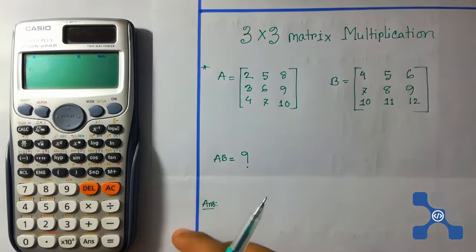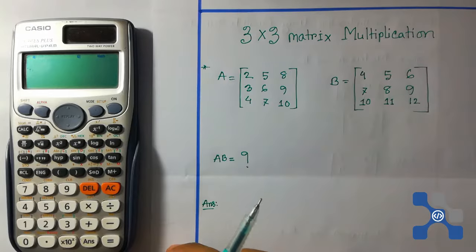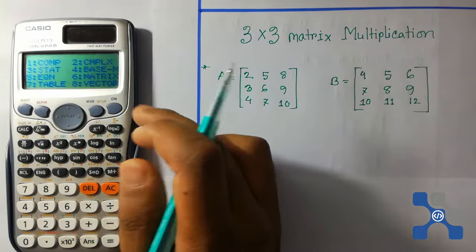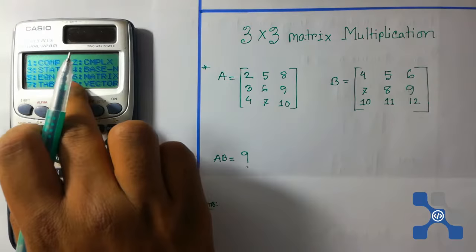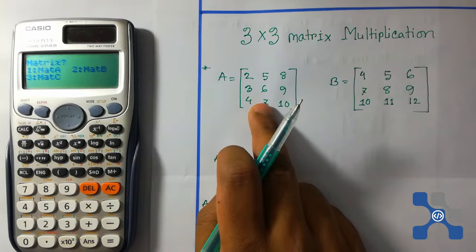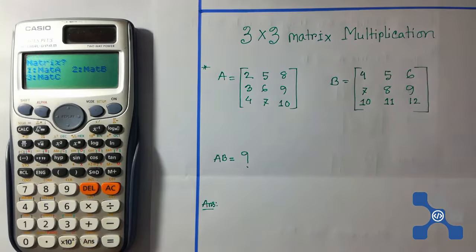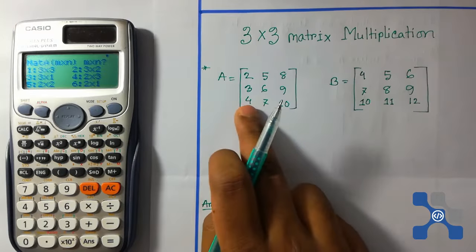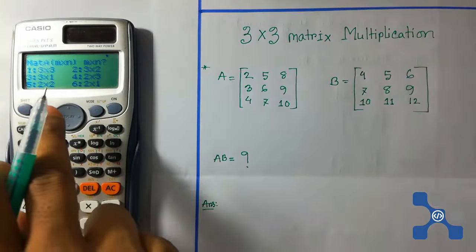Press on button to power on this calculator. Now press mode button and then press 6 for matrix. Load this matrix on mat A. Press 1 button. Our given matrix A is 3 by 3, so select 3 by 3.